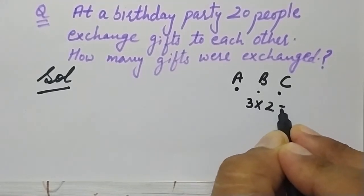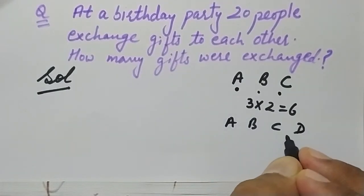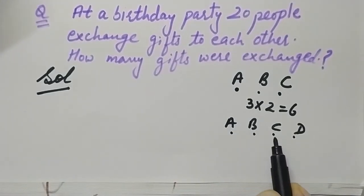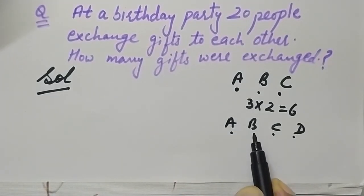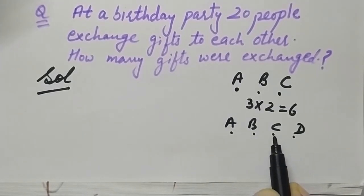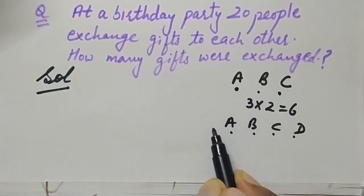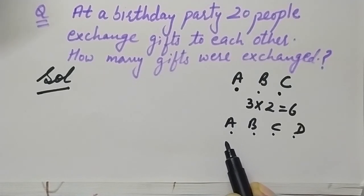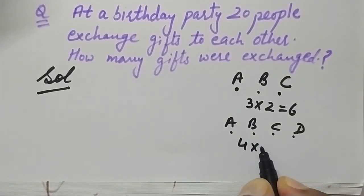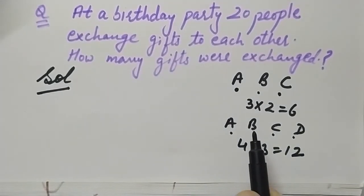Now suppose there are four members in the party. A will exchange three gifts — one to B, one to C, one to D. Similarly, B will also exchange three gifts — one to A, one to C, one to D. C and D will also exchange three gifts each. So four people are each exchanging three gifts, meaning four into three equals 12 gifts will be exchanged.